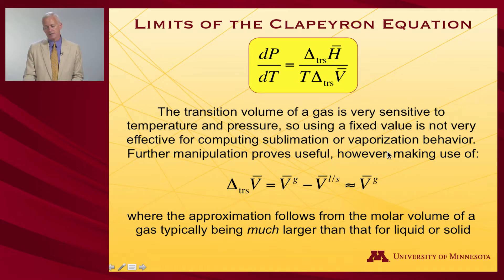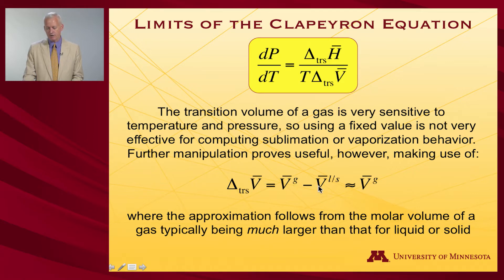On the other hand, if what we're interested in is a gas, then things become a little bit easier. That's because the transition volume for a gas — which is the gas volume minus the volume of either the liquid (if we're talking about boiling) or the solid (if we're talking about sublimation) — is really pretty well approximated by just the volume of the gas. The volume of the gas is so much larger than the volume of the condensed phase that the condensed phase volume almost drops out.